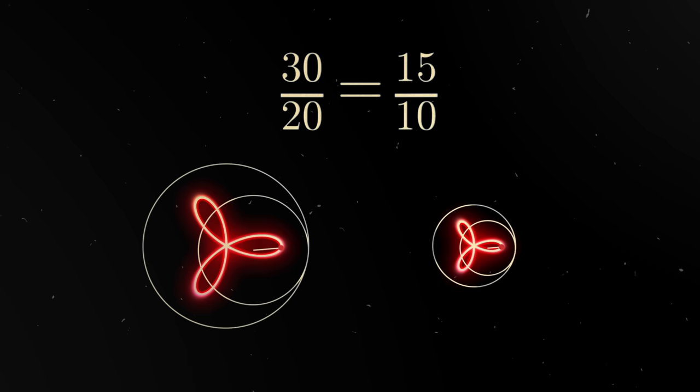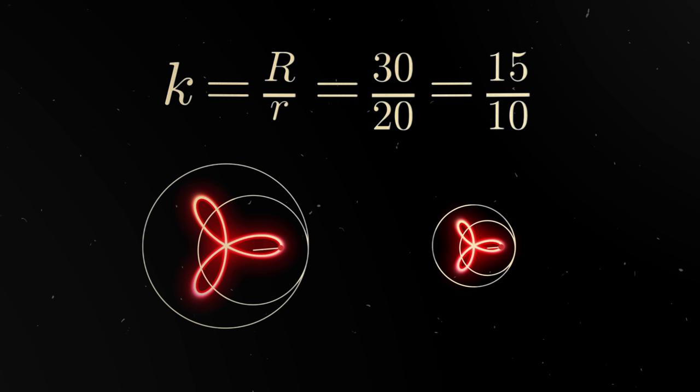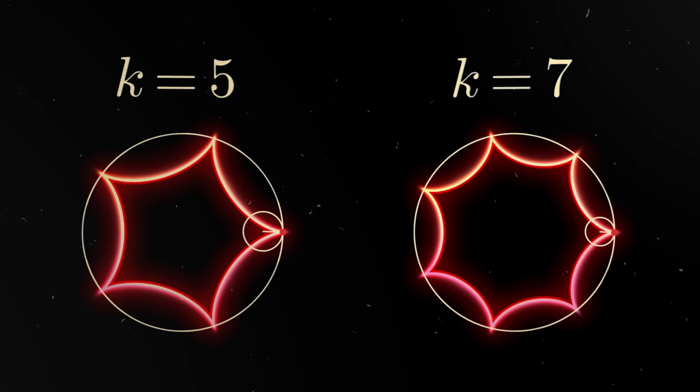Let's call it the letter K. Let's take a look at how exactly the image changes when this coefficient is changed. If the number K is an integer, the image resembles a star with the corresponding number of rays.